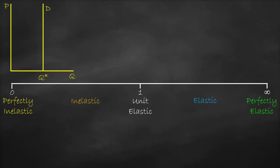Perfectly elastic means very, very responsive. Any little change in price results in a huge change in quantity demanded. If we draw it with price on the y-axis and quantity on the x-axis, the demand curve will be a horizontal line. This means if the price increases by a small percentage, quantity demanded drops to zero; if the price decreases by a small percentage, quantity demanded increases by a very high amount.